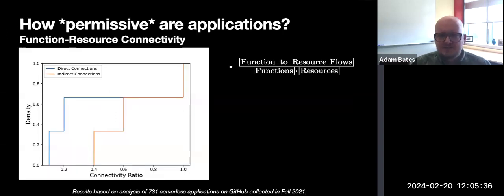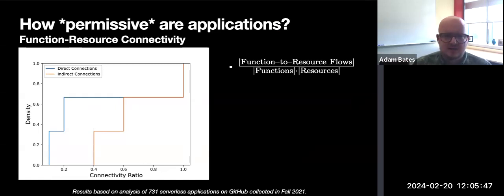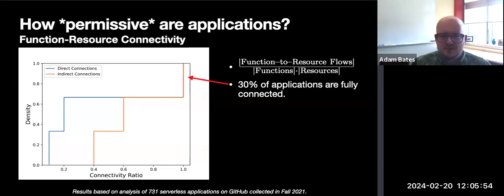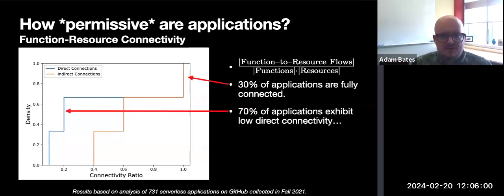So what types of things can we do with GRASP? We evaluated hundreds of open-source serverless applications collected from GitHub and calculated the overall connectivity of application security policies — that is, the proportion of permitted flows over the total number of possible flows. 30% of applications were fully connected, indicating that a global allow-all policy was employed. Of the remaining 70% of applications, at first glance it appears that connectivity is fairly low, suggesting sound security policy reasoning.